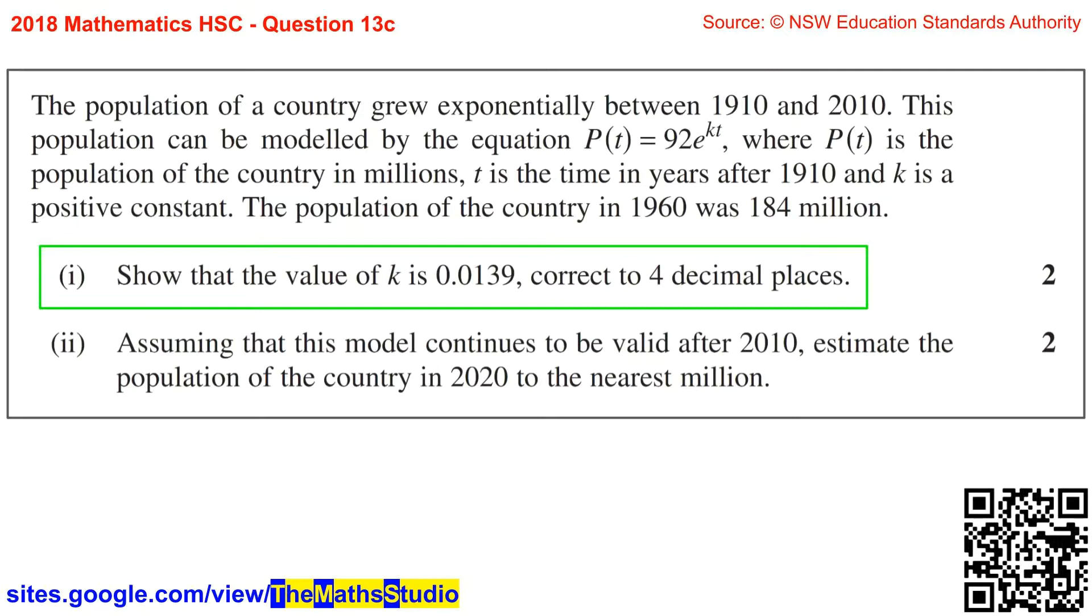The population of the country in 1960 was 184 million. Part 1: Show that the value of k is 0.0139, correct to four decimal places.